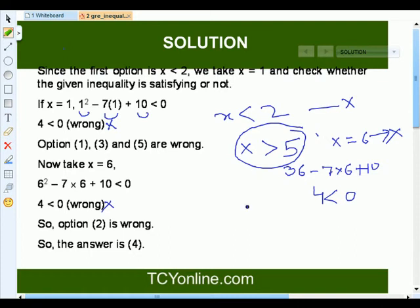Now, let's talk about the option that is second, where x is less than 5. Here, we will talk about x equals to 4. So, now we get 16 minus 28 plus 10. That simply gives us negative 2, which is less than 0.